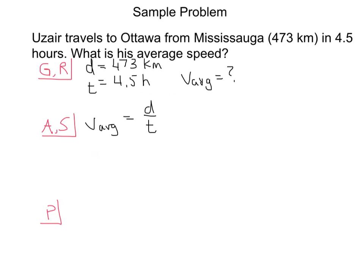We're going to do a quick sample problem here to show you how this can be used. So here our problem says that Uzair travels to Ottawa from Mississauga, which is 473 kilometers, in 4.5 hours. What is his average speed?